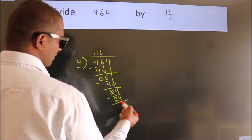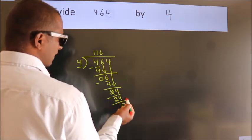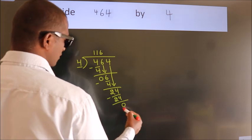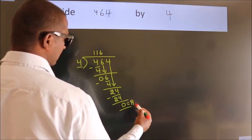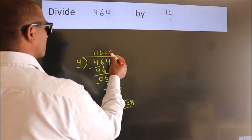After this, no more numbers to bring down. So we stop here. This is our remainder. This is our quotient.